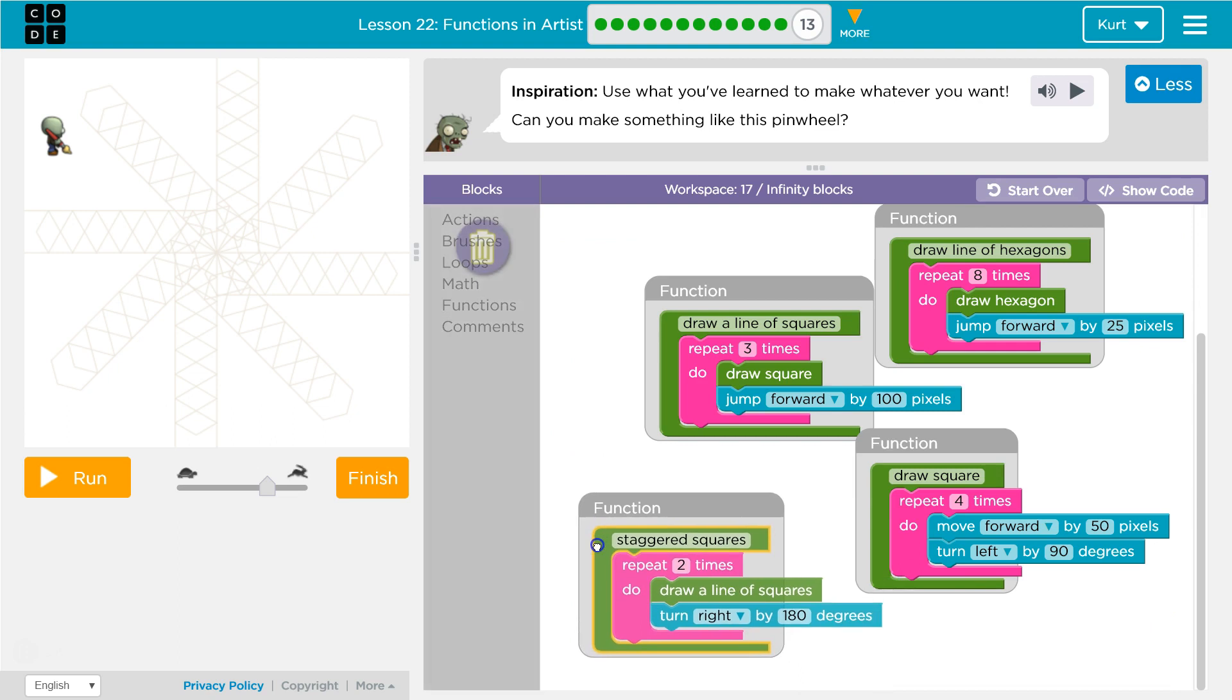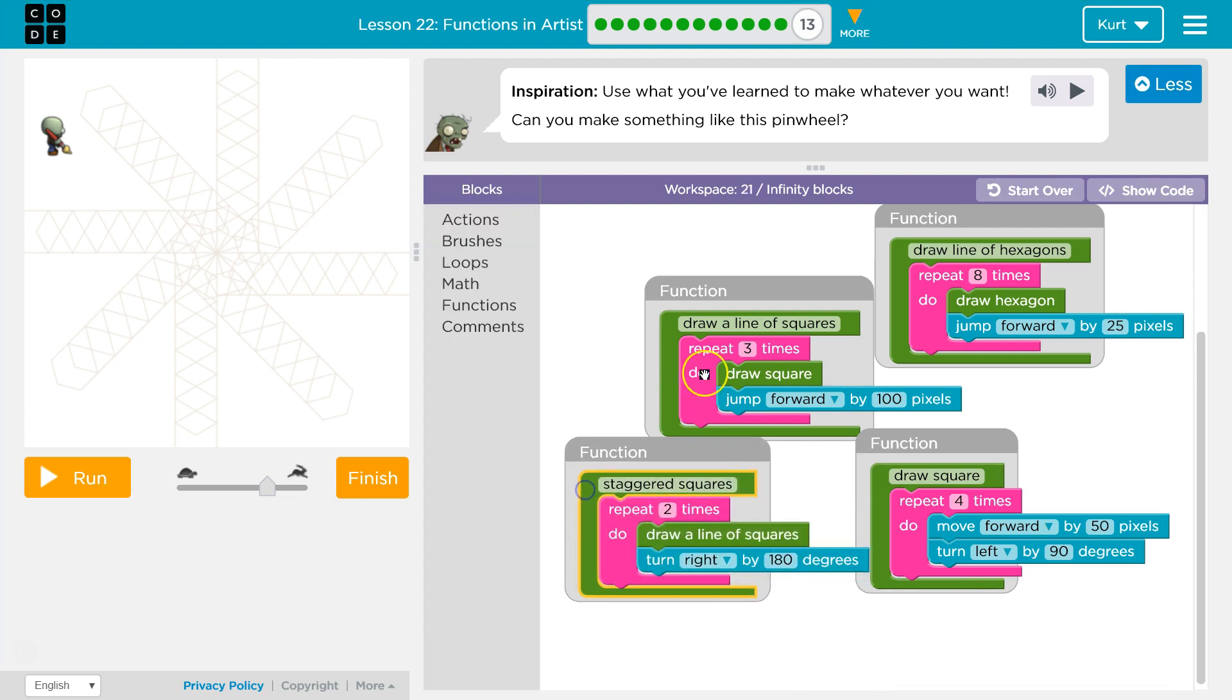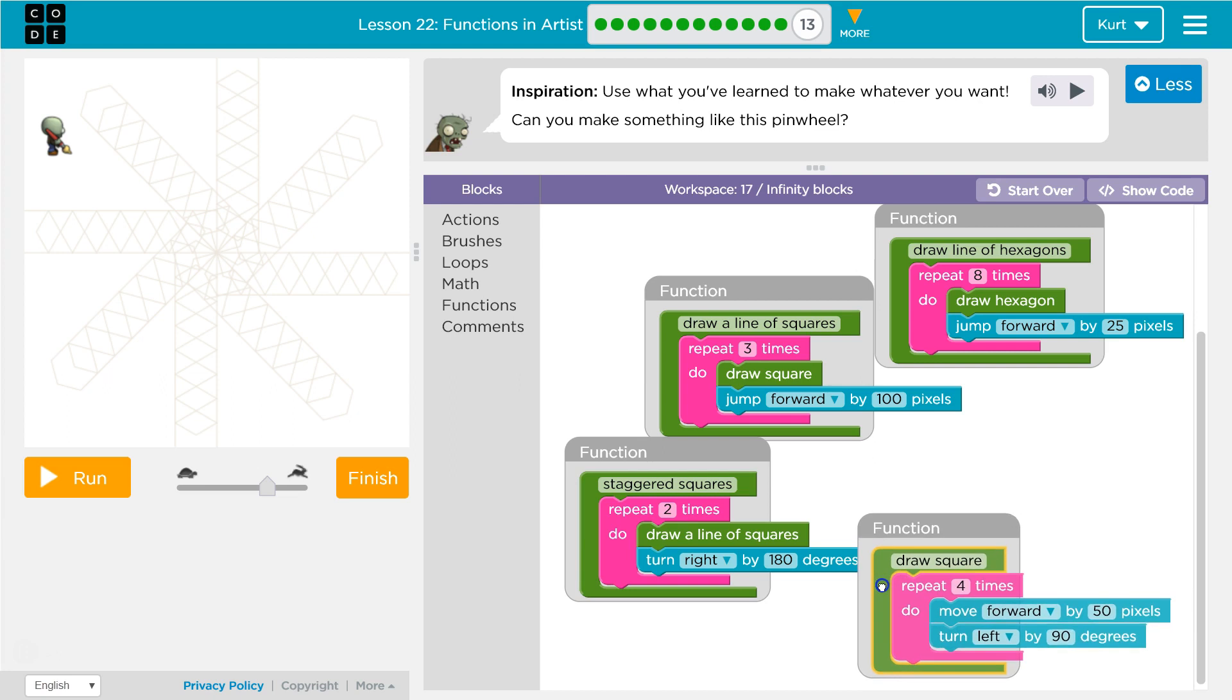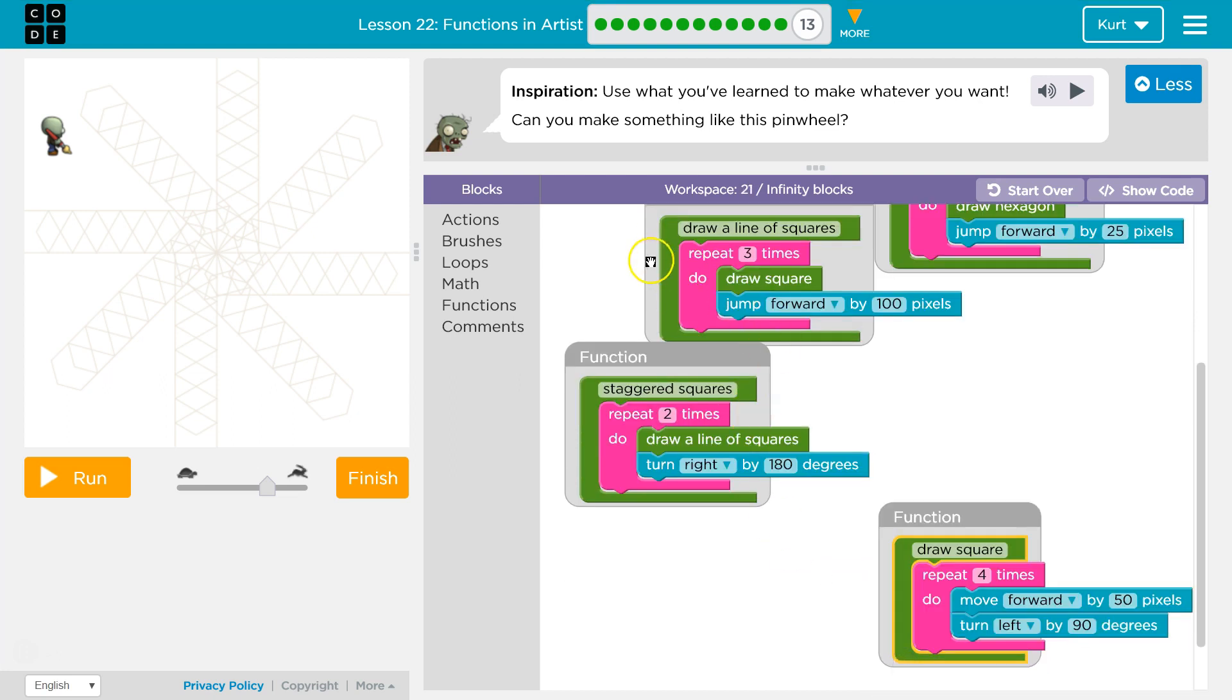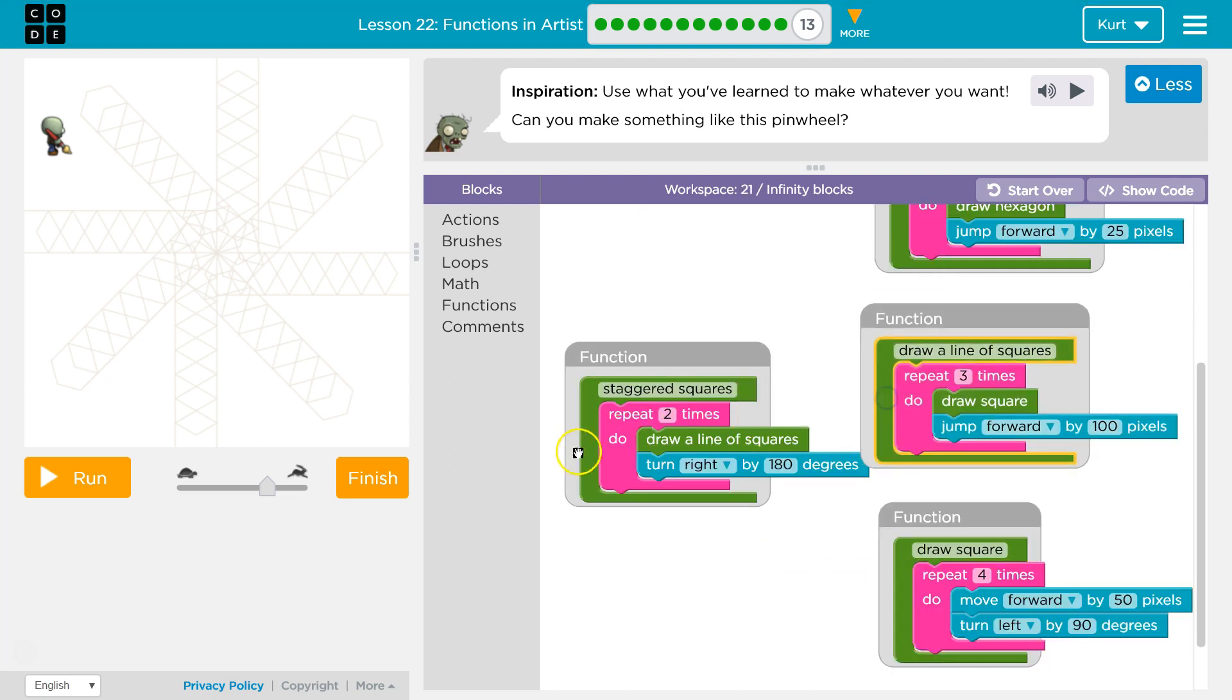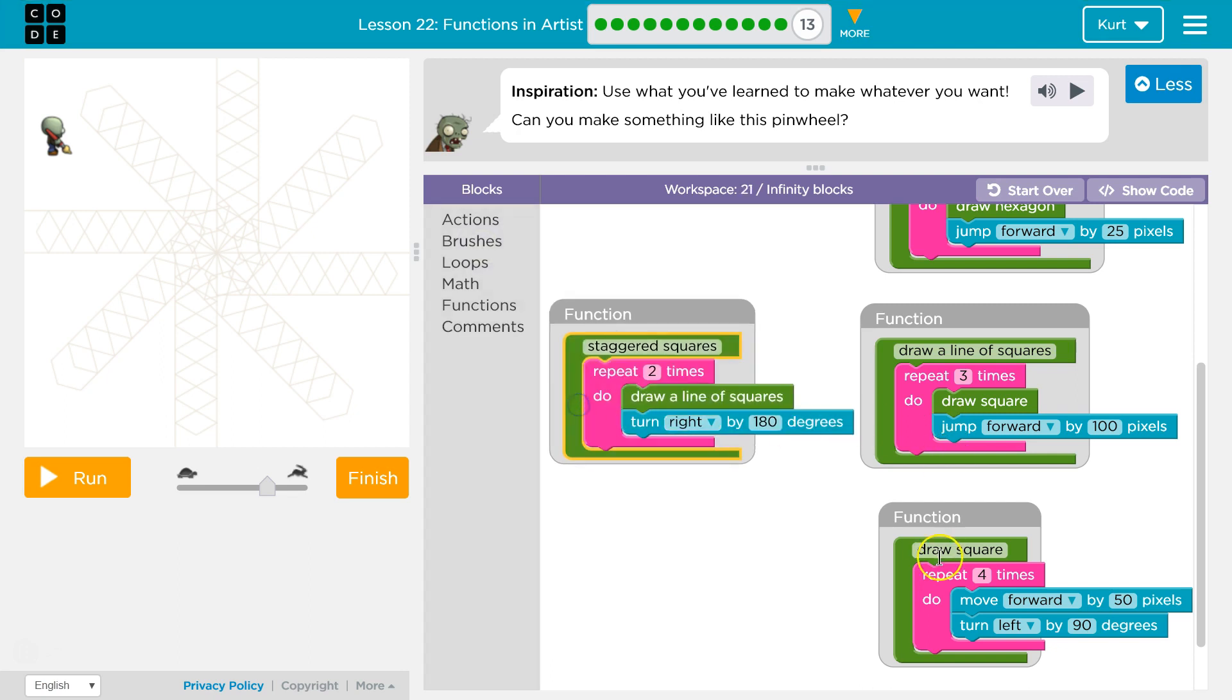Draw staggered squares, draw a line of squares. So draw staggered squares is going to call on draw a line of squares. And that's going to use draw a square.